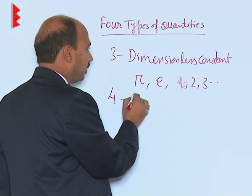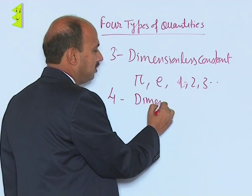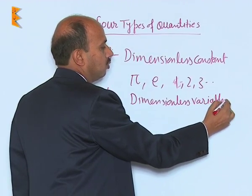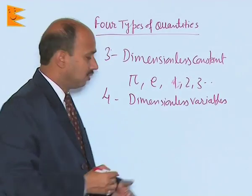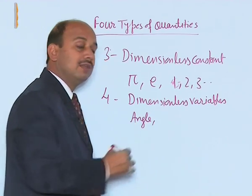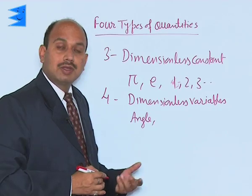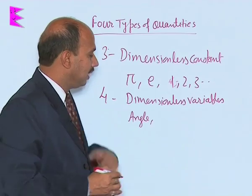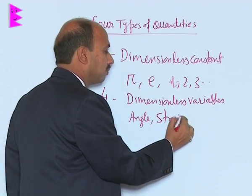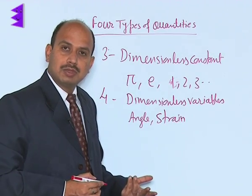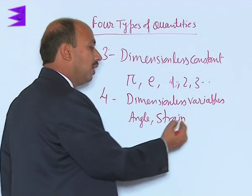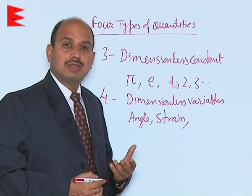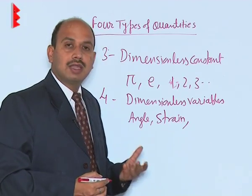The fourth and last type of quantities are dimensionless variables. Dimensionless variables include quantities like angle — you know angle is a dimensionless quantity but it has a unit that is radian. Similarly, strain is also a dimensionless variable, and the refractive index as well. All these quantities are dimensionless variables.